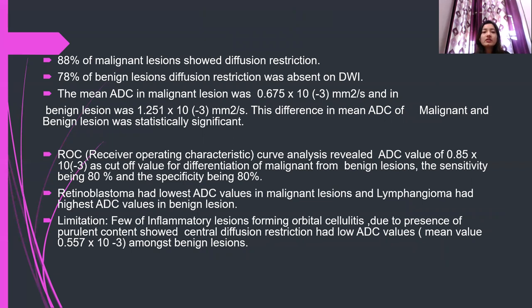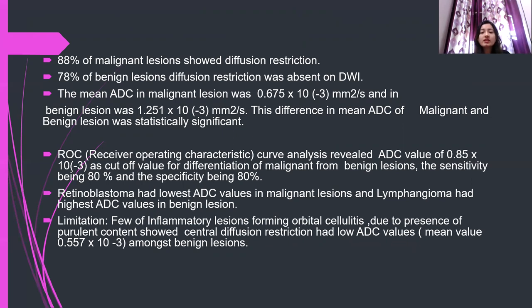78% of benign lesions showed absence of diffusion restriction. The mean ADC in malignant lesions was 0.67 × 10⁻³ mm²/s, and in benign lesions was 1.251 × 10⁻³ mm²/s. The difference in mean ADC of malignant and benign lesions was statistically significant. ROC curve analysis revealed an ADC value of 0.85 × 10⁻³ mm²/s as the cutoff for differentiation of malignant and benign lesions, with sensitivity of 80% and specificity of 80%. Retinoblastoma had the lowest ADC value among malignant lesions. A limitation was that a few inflammatory lesions such as orbital cellulitis, due to presence of purulent content, showed diffusion restriction with low ADC, mean being 0.557 among benign patients.